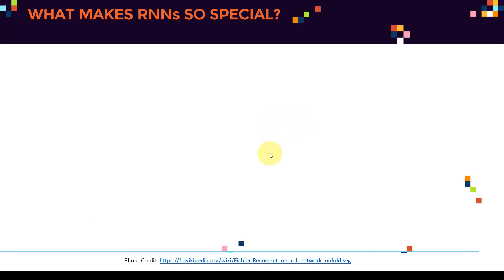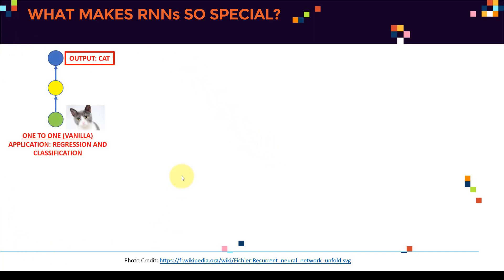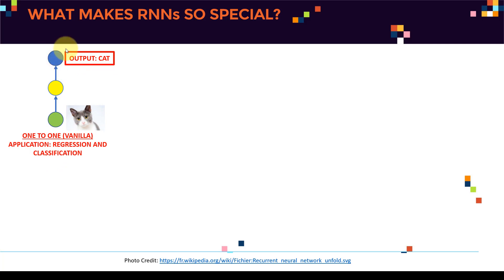The first type is our one-to-one vanilla network. We feed in an image and the output is simply a class label — for example, cat or dog. We can use a feed-forward ANN to perform regression or classification depending on the type of output. If the output is discrete categories, that's classification. If the output is continuous, we have regression.